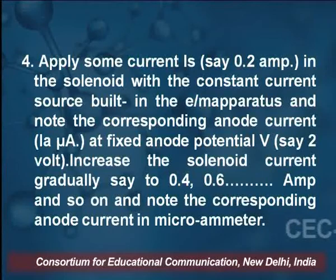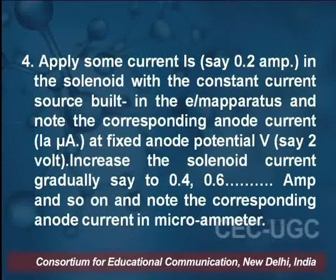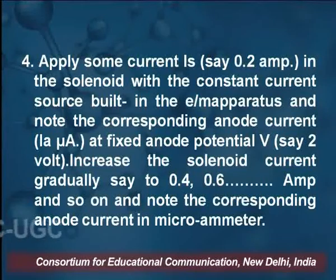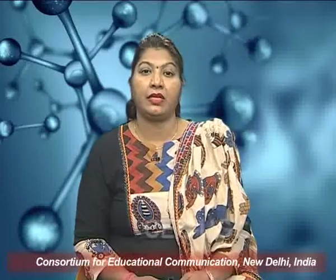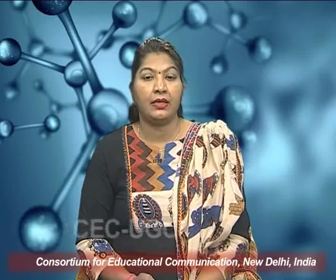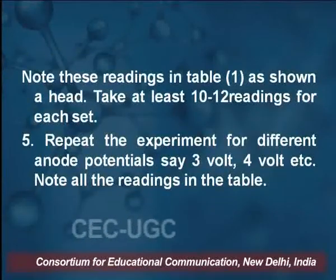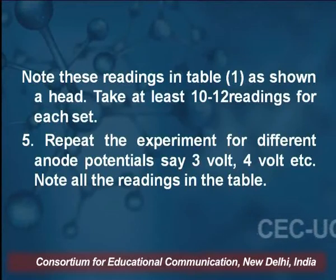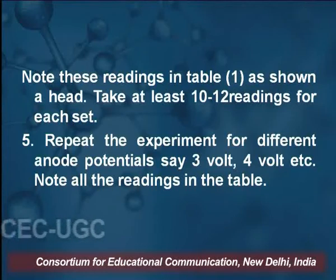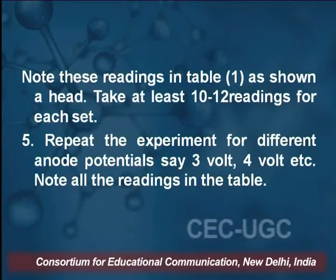In this manner, we increase the solenoid current gradually at intervals of 0.2 ampere: 0.4, 0.6, and so on. As the solenoid current changes, the magnetic field changes accordingly. We note the corresponding anode current in microamperes. We change the solenoid current through 0.2, 0.4, 0.6 amperes and note the corresponding anode current, taking at least 10 to 12 readings for one set with anode voltage fixed at 2 volts.